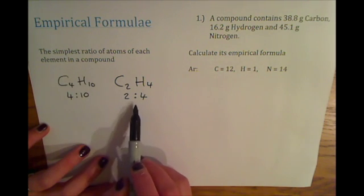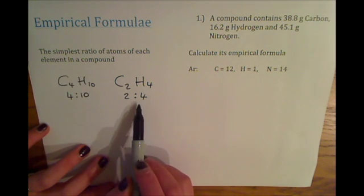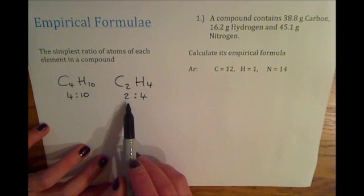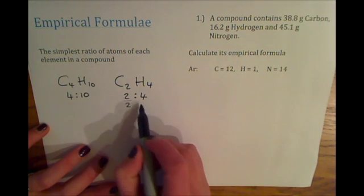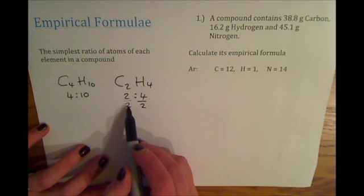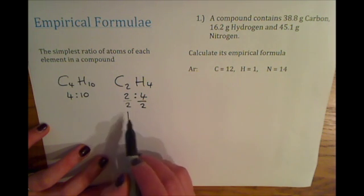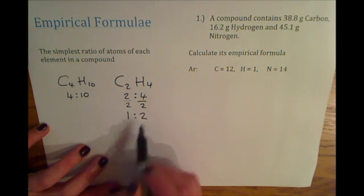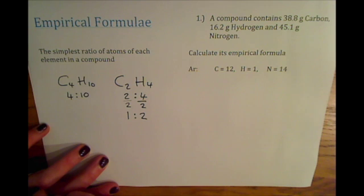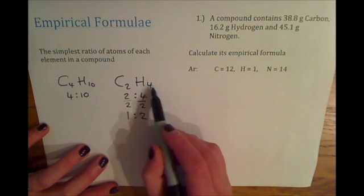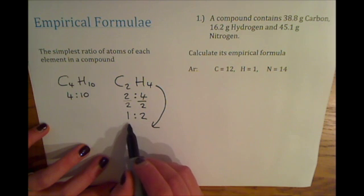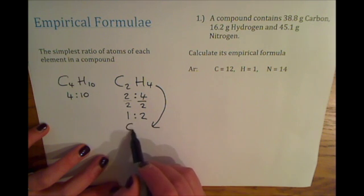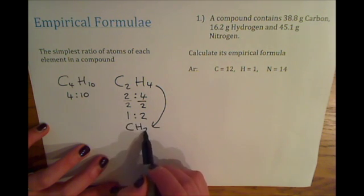The empirical formula is the simplest ratio of atoms of each element. So if we take C2H4, the ratio 2 to 4 is not the simplest. If you divide both by 2, you get a simpler ratio of 1 to 2. So the empirical formula for C2H4 would be CH2.